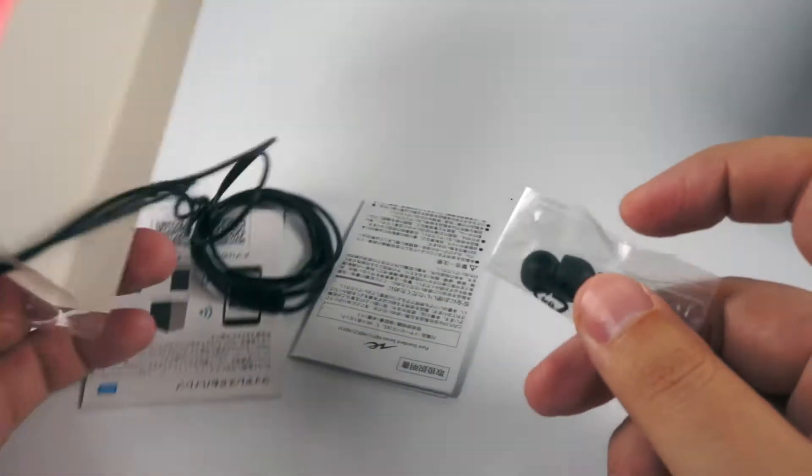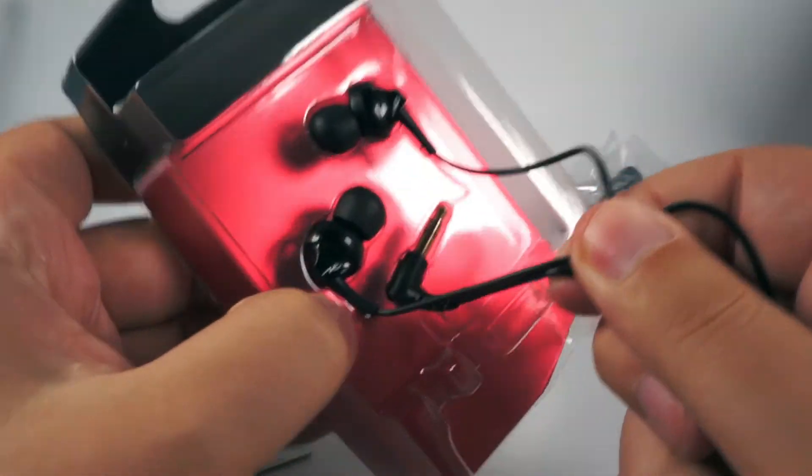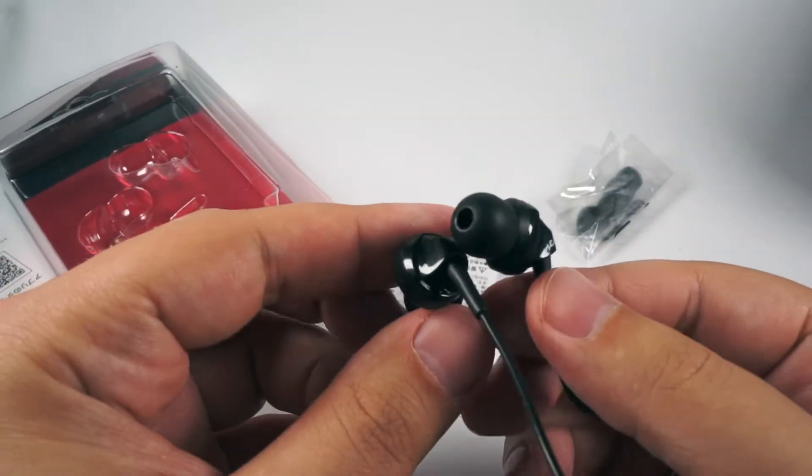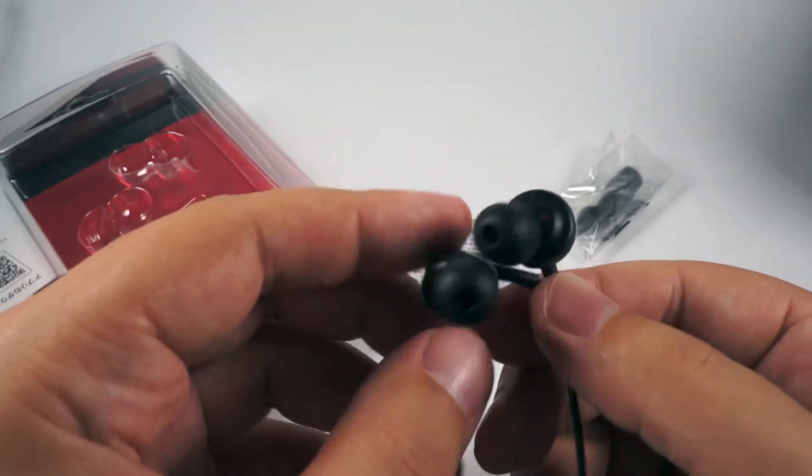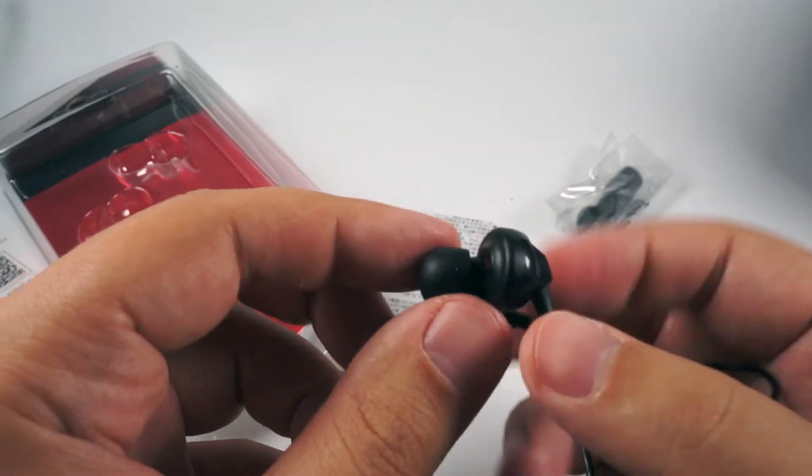Also two pairs of tips, some papers and that's all. Build is absolutely the same. Radius has these earphones in three different colors so you can choose one that you like the most.